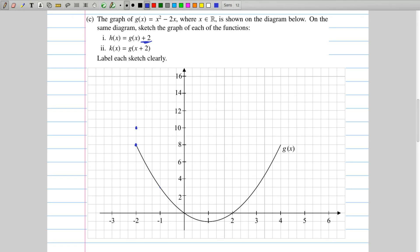If we take g of minus 1, that's here, and that is a height of 3. Well, h is 2 higher than that, so it must be at 5. And we can continue going through the whole graph like this, just taking each of the points that we can tell from g of x, adding 2 to them.